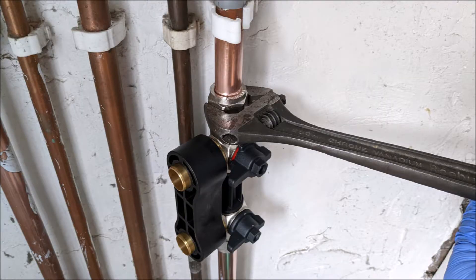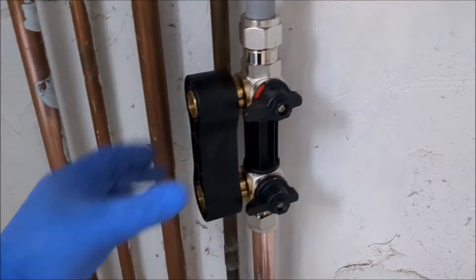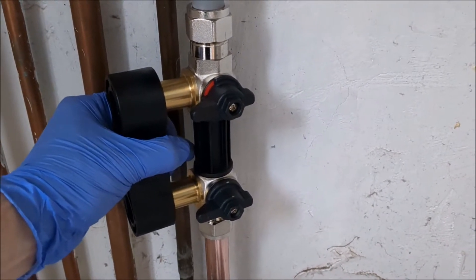Tighten the compression nuts with a 32mm spanner. Remove the spacer from the short pipes.